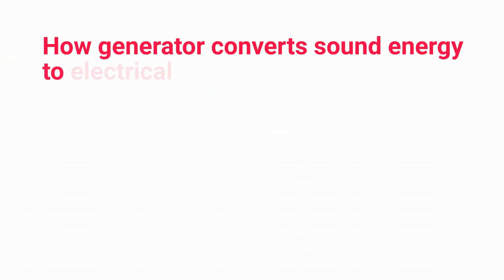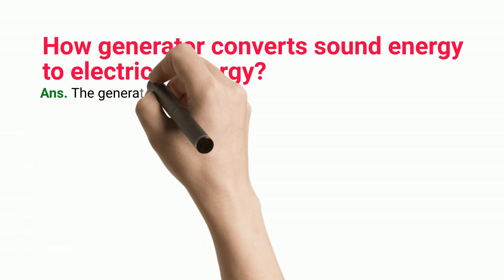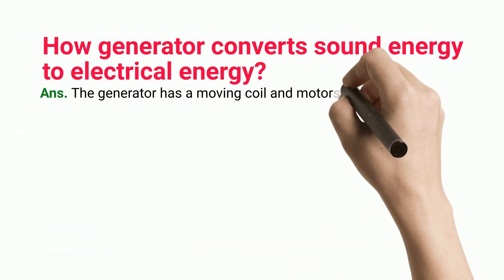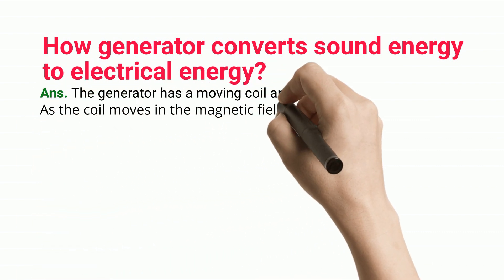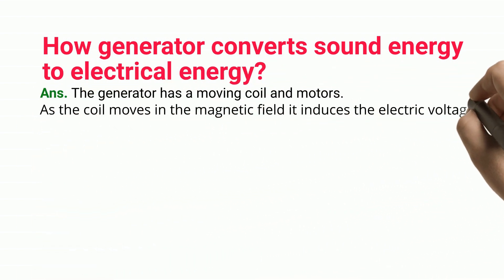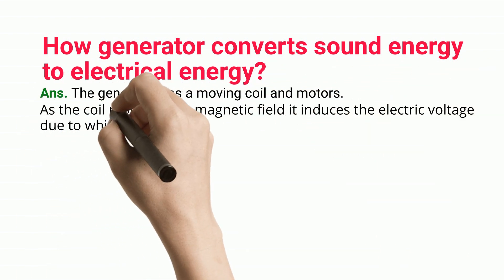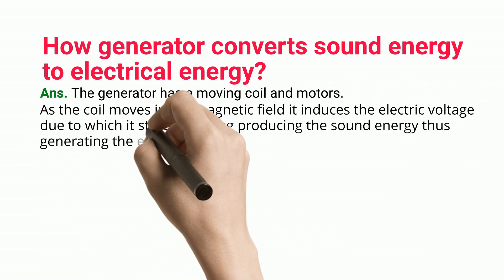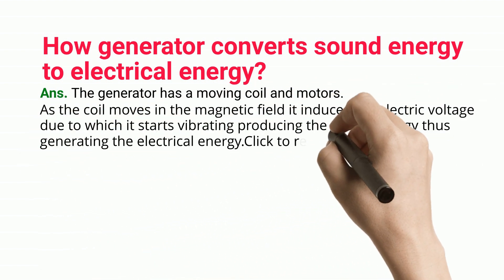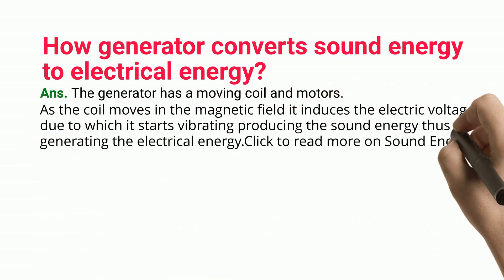How does a generator convert sound energy to electrical energy? The generator has a moving coil and motors. As the coil moves in the magnetic field it induces the electric voltage due to which it starts vibrating, producing sound energy thus generating the electrical energy.